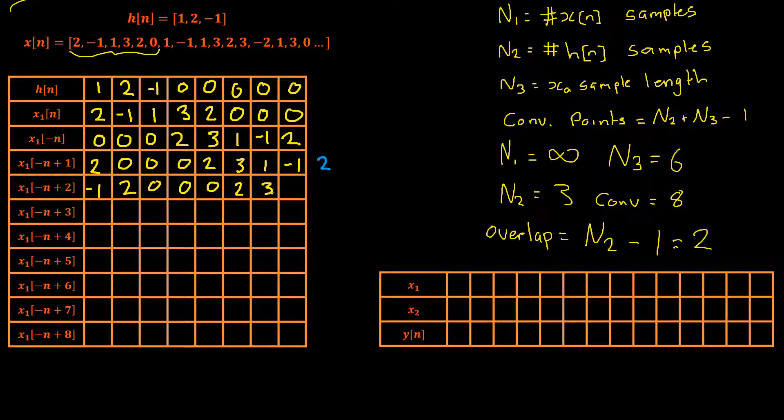Then we shift the signal again once more to the right which gives us negative 1, 2, 0, 0, 0, 0, 2, 3 and 1, and then we repeat the process again. 1 times negative 1 is negative 1 plus 2 times 2 which is 4 which gives us 3. We'll repeat this process for the remainder of the terms but we might skip ahead because it's mighty boring to watch.